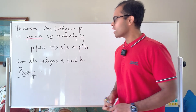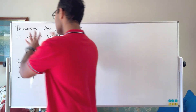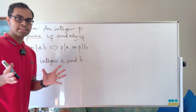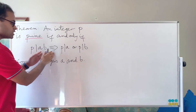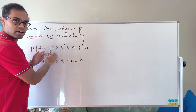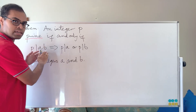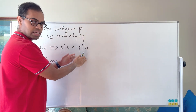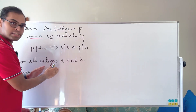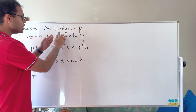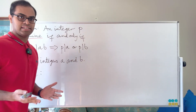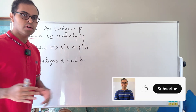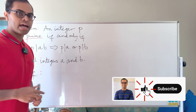Let's dive into the proof. There are two directions here. The first direction, which is going to be easier to prove, is that if this condition is satisfied — that p is a factor of ab implies p is a factor of a or p is a factor of b for all integers a and b — then the only factors of p are one and itself. So it is prime in the usual sense that we know.